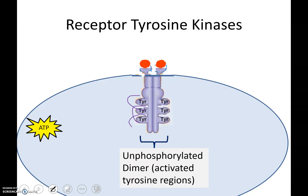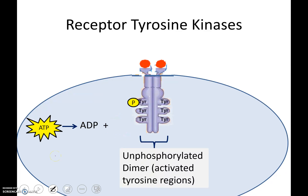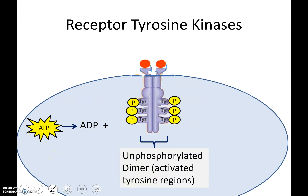These tyrosine regions are going to act as kinases and are activated. A kinase transfers phosphate groups, so what happens is they're going to take a phosphate off of ATP and attach it to one of the tyrosines. The tyrosine kinase on this side attaches a phosphate here, and vice versa — they phosphorylate each other. So the kinase activity is taking phosphates from ATP and phosphorylating this dimer.